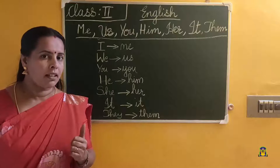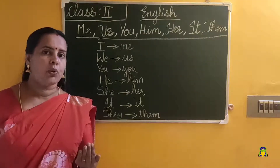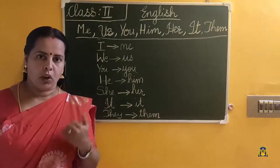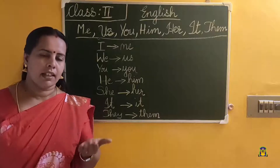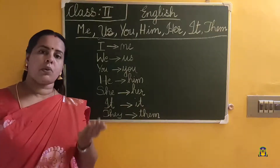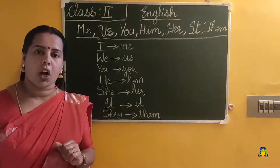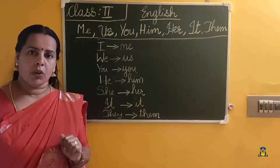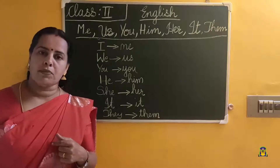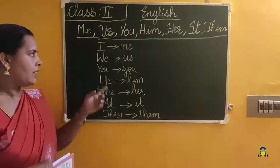What are pronouns? Pronouns are words that are used in the place of naming words — names of places, things, animals, and persons. So words used in the place of naming words, instead of naming words, are called pronouns. We studied many pronouns, so these are object pronouns.